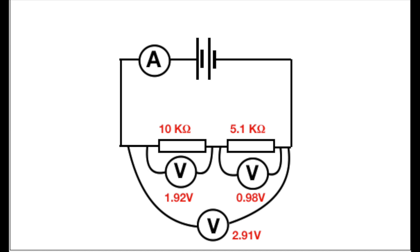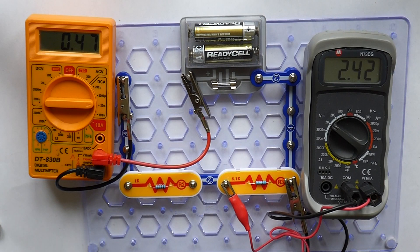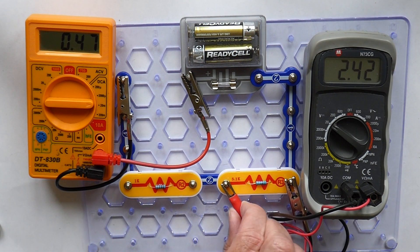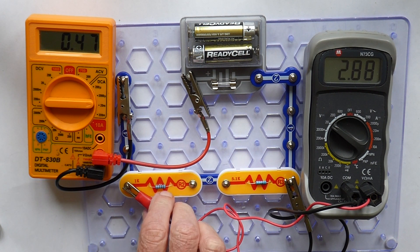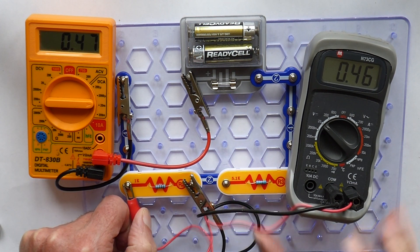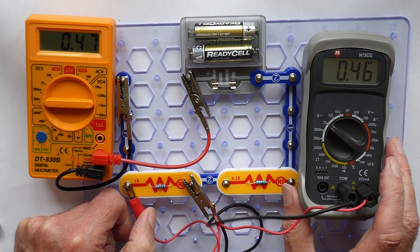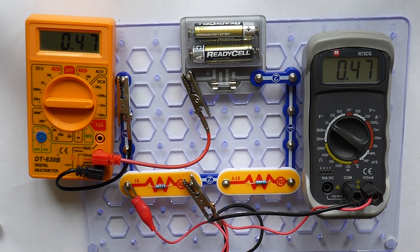One final set of measurements, this time across a 1k ohm and a 5.1k ohm resistor. The potential difference across 5.1k ohm is 2.42 volts, across the pair 2.88, and then finally on the left hand side across 1k ohm, 0.47 volts.